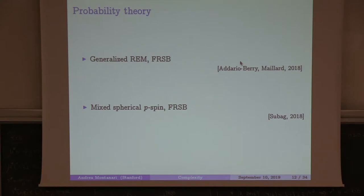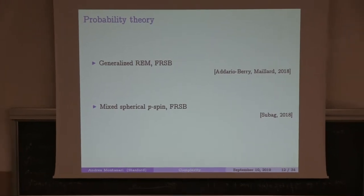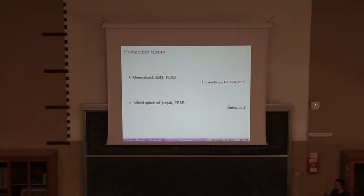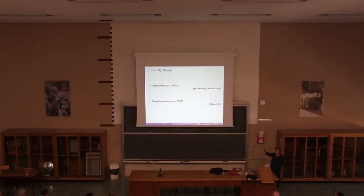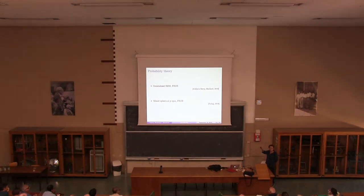Finally, there is a last line of work that came up over the last year within probability theory. In particular, these two papers, one by Addario-Berry and Maillard, who analyzed the generalized random energy model in a case in which it's full RSB and come up with an algorithm that finds a near-ground state in polynomial time, and the other by Subag that considers the mixed spherical P-spin and shows, obtains a very elegant algorithm that achieves in the case in which it is full RSB a near-ground state in polynomial time. These are very nice papers, very beautiful papers. Both of them, it's fair to say that they use quite heavily the structure of the model.